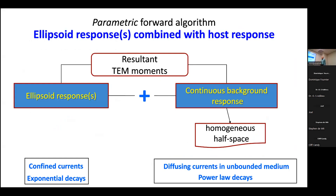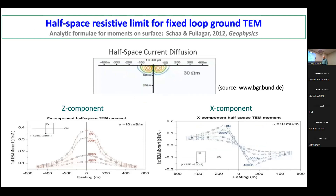In addition to the ellipsoid responses — we might have one or several ellipsoids — we combine those with a continuous background response from a homogeneous half space. We integrate data over a certain time range and combine that with the same time range from a homogeneous half space. This is a fairly crude way to represent the background, but by the time you reach late time it's generally satisfactory — it's not perfect but we're dealing with late time responses.